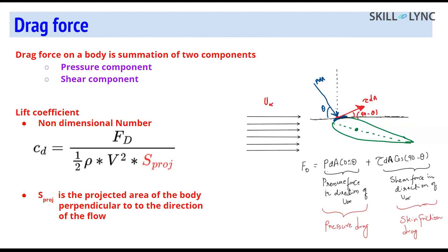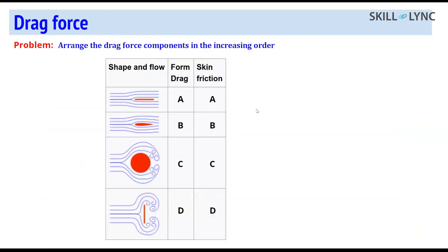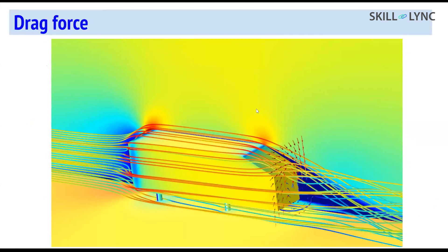If theta becomes 90 degrees, cos of 90 is zero so the pressure drag contribution becomes negligible. For a flow over a bluff body, where flow comes in from the inlet over the body, pressure drag is more dominant because there is a large pressure difference created.